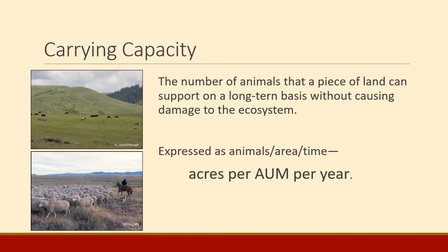Carrying capacity is usually expressed as a number of animals per some area for some amount of time. Most often, you talk about acres per animal unit month per year. We're going to talk about AUMs later, but that is a unit of animals, a unit of area, and a unit of time — and that's what it takes to express carrying capacity.